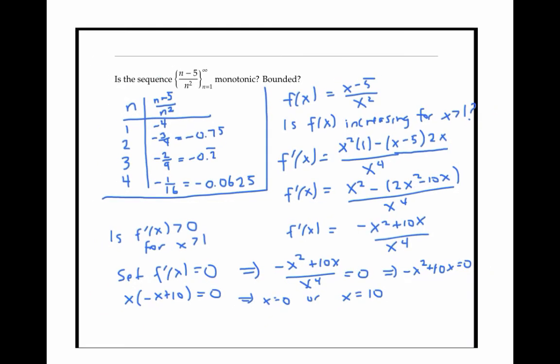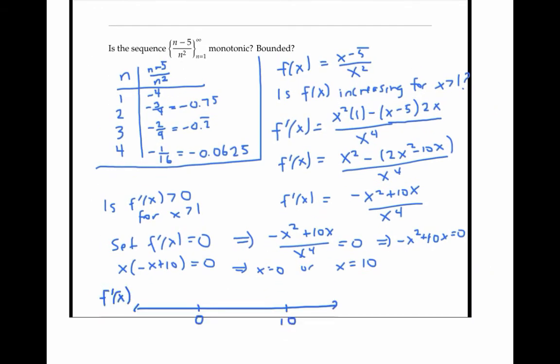Now if I draw my number line, since f prime is equal to zero at zero and 10, it'll be positive and negative in between these values. And by plugging in values,